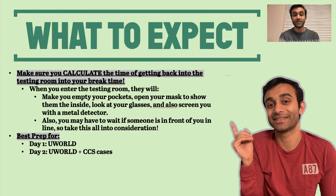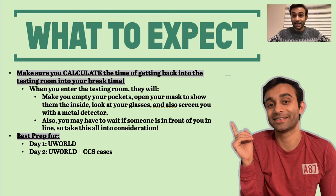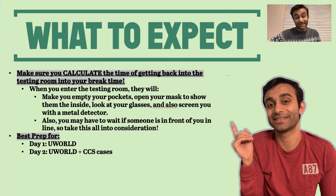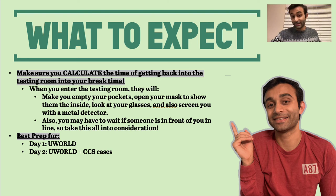Another critical tip: factor in the time it takes to re-enter the testing room into your break time. Every time you enter a Prometric testing room you have to open all your pockets, take off your glasses for inspection, show the inside of your mask, and open your jacket to show the pockets. If someone is in line ahead of you it can take one to three minutes to get back in. On my first day I almost ran out of break time and actually went 30 seconds over because re-entry took way longer than I expected.